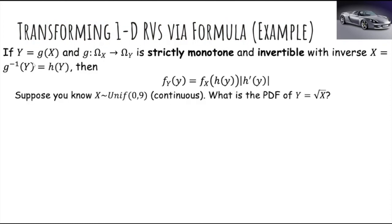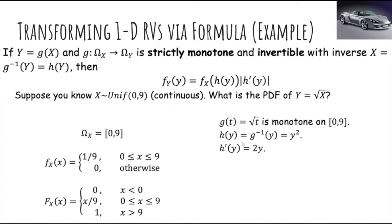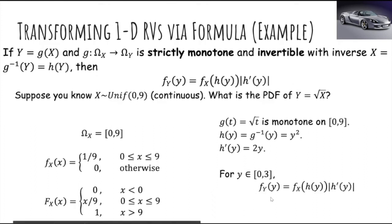Let's apply this formula. Suppose X is again uniform from 0 to 9, and we want the pdf of Y = √X. Here, g(t) = √t, which is monotone increasing on 0 to 9. The inverse is h(y) = y², and the derivative of the inverse is h'(y) = 2y. So, for Y in the range 0 to 3, the pdf of Y is the pdf of X evaluated at h(y) = y², times |h'(y)| = 2y. Since the pdf of X is uniform at 1/9 everywhere, we get f_Y(y) = (1/9) · 2y = 2y/9.